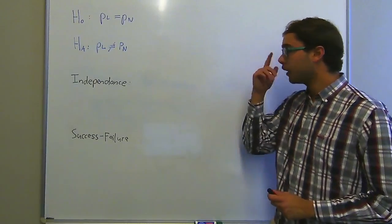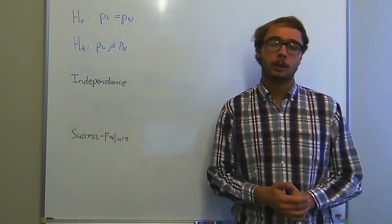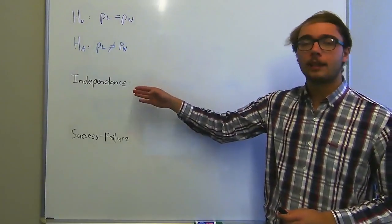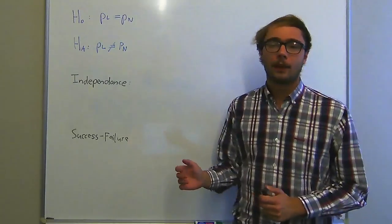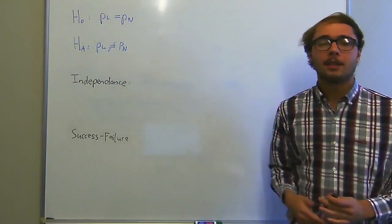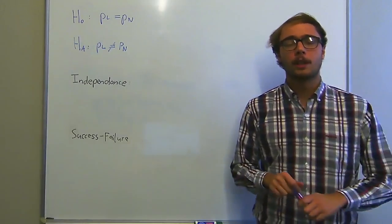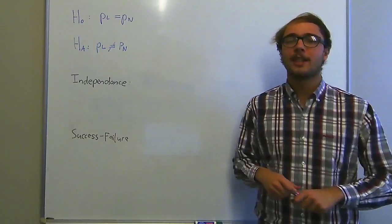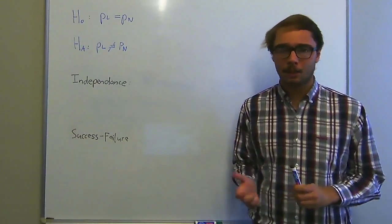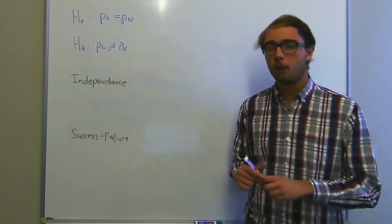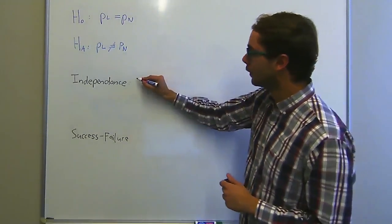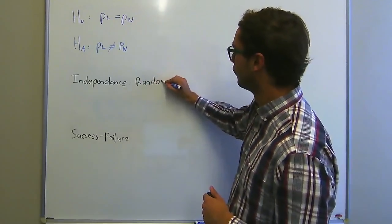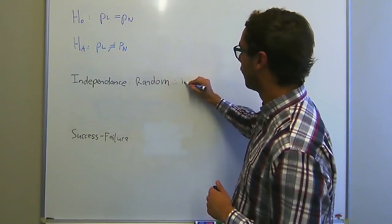Before we proceed, we need to check whether we can apply the normal distribution, using two tests: the test for independence and the success-failure test. For independence, we ask: was a random sample used? The question explicitly states a random sample was used, and therefore we can assume independence.